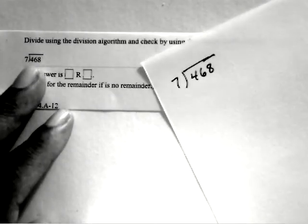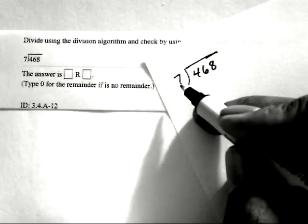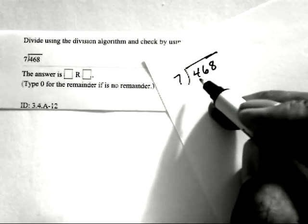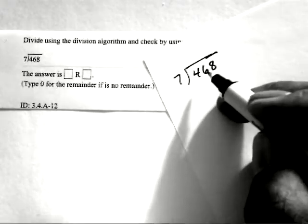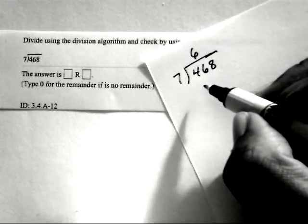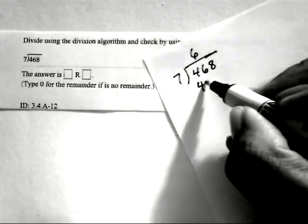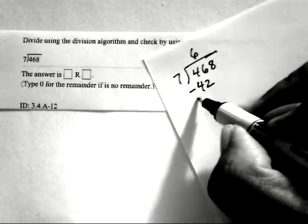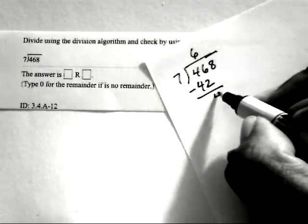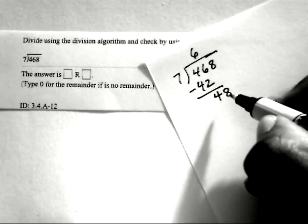Using the division algorithm, we know 7 cannot go into 4, but we can divide 7 into 46. So you have to think of how many times 7 would go into 46, and that would be 6 times. Then multiply the 6 times 7, that would give you 42. Subtract 42 from 46, that's going to give you 4. And then you bring down the next number, which is 8.